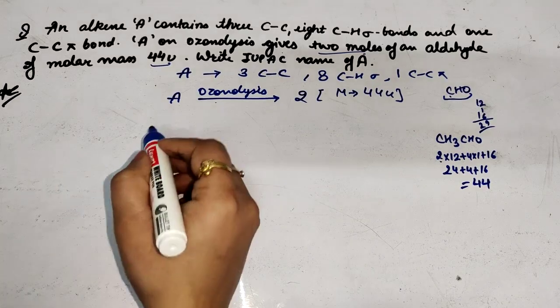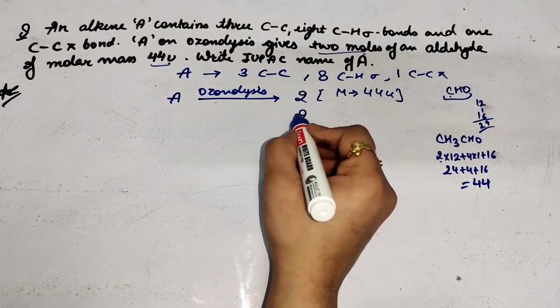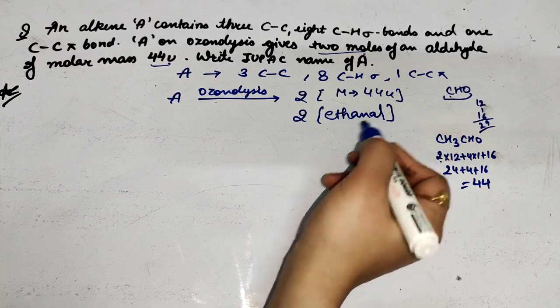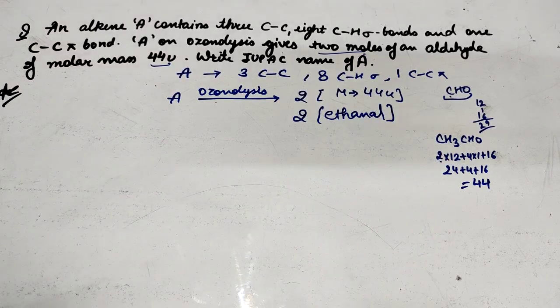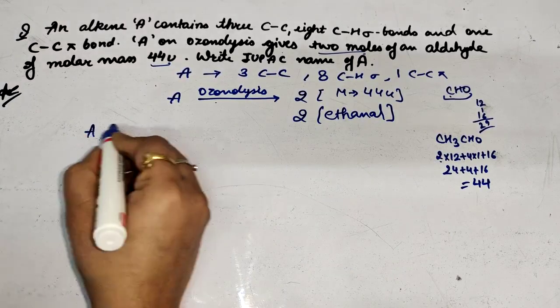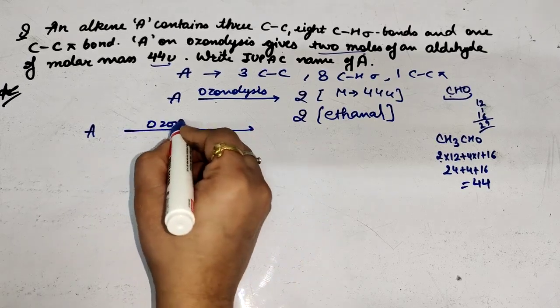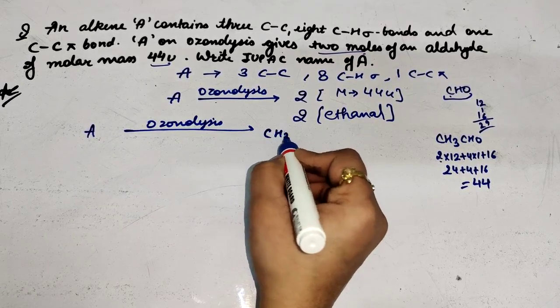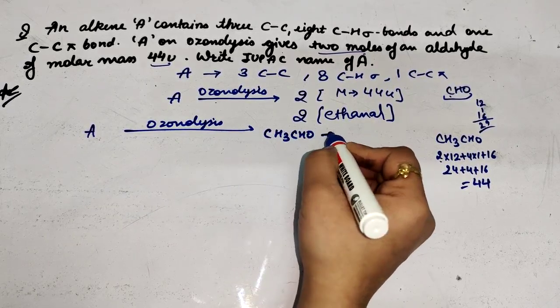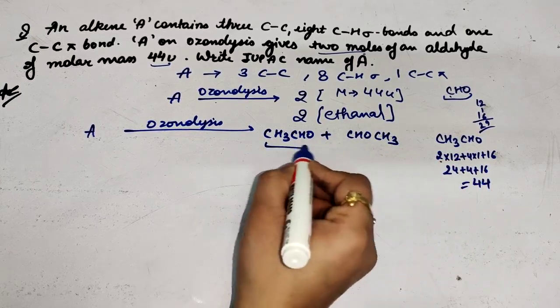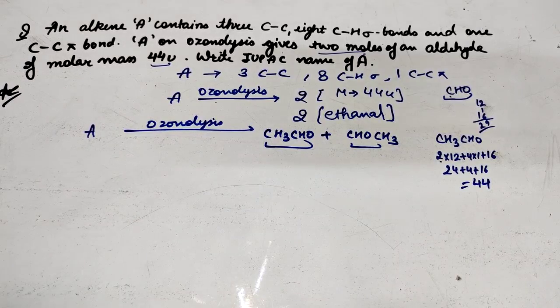So ethanal's molar mass is 44u. This means when A undergoes ozonolysis, 2 moles of ethanal are formed. Ethanal's formula is CH3CHO. So when A undergoes ozonolysis, what is formed? CH3CHO plus CHOCH3. This is ethanal, this is also ethanal.